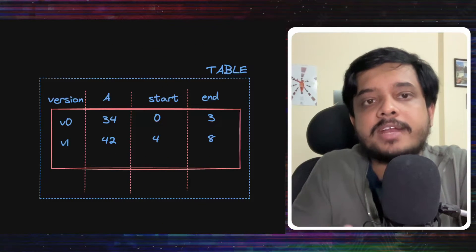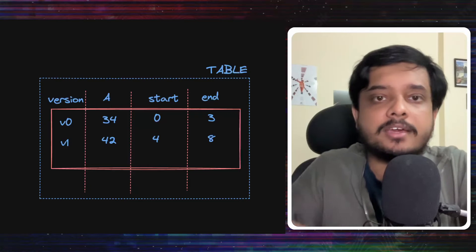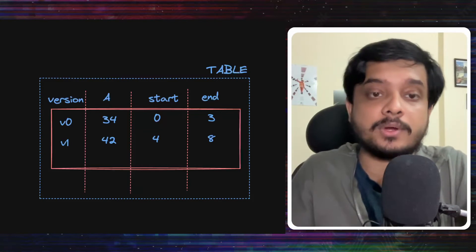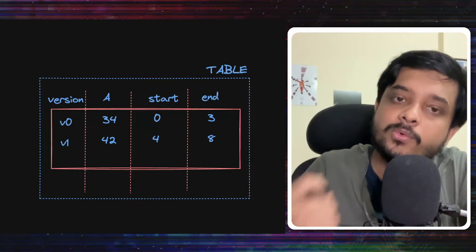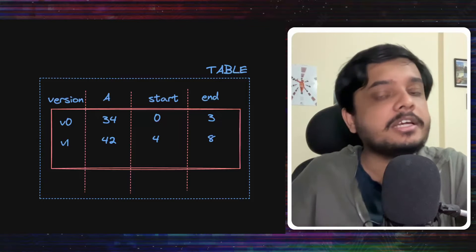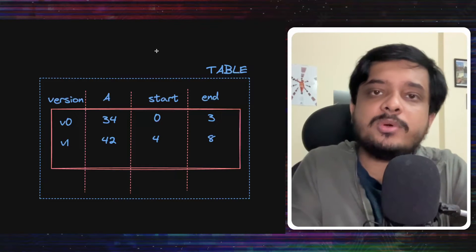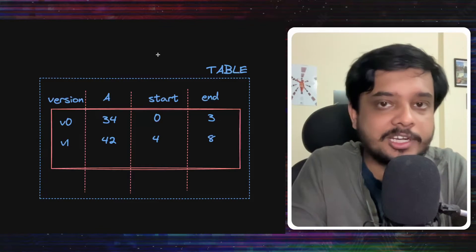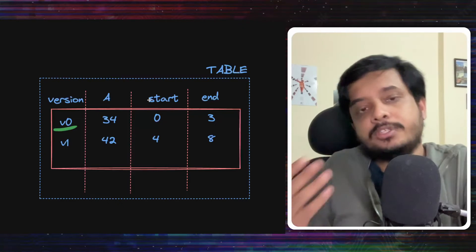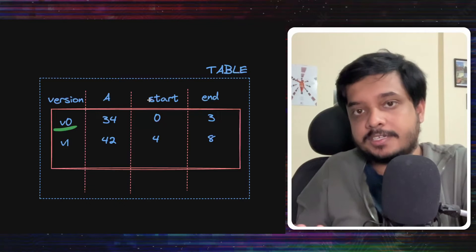The versions will also have timestamp data associated with it, like which timestamp till which timestamp a version was the latest one. A transaction only works with the data version which was latest when the transaction started. It does not touch any other version. Now with every piece of data or every row in the database, there will be the version information associated with it.